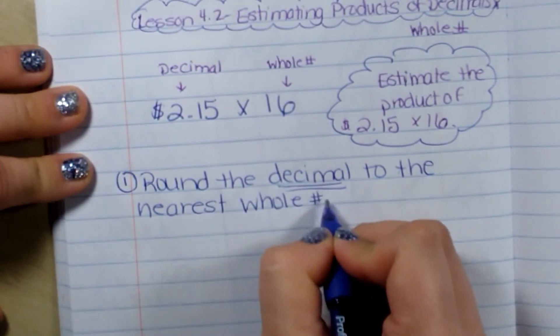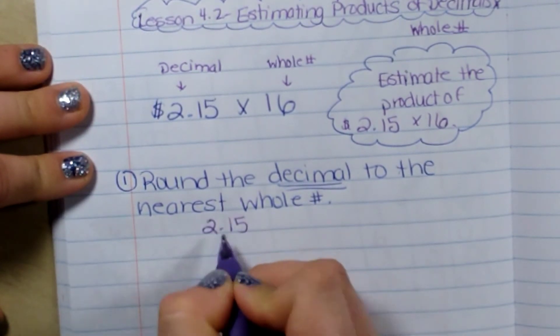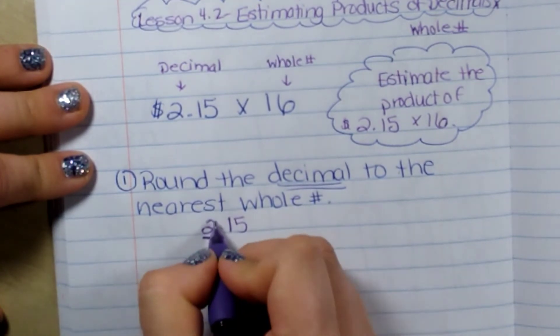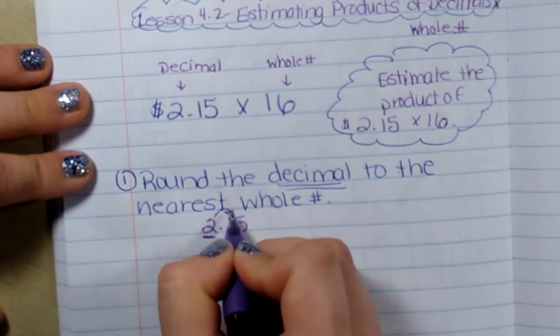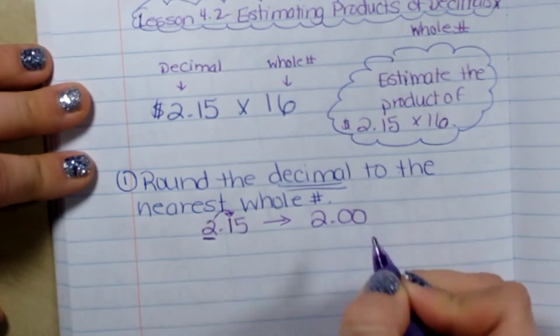That way we have two whole numbers. So if I have $2.15, if I am rounding to the whole number, I'm rounding to the ones place. I look next door, four or less, let it rest. So it would be two.